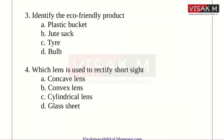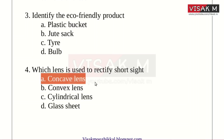Fourth one: Which lens is used to rectify short sight? Option A: Concave lens. B: Convex lens. C: Cylindrical lens. D: Glass sheet. The right answer is Option A, concave lens. Concave lens will correct short sight.